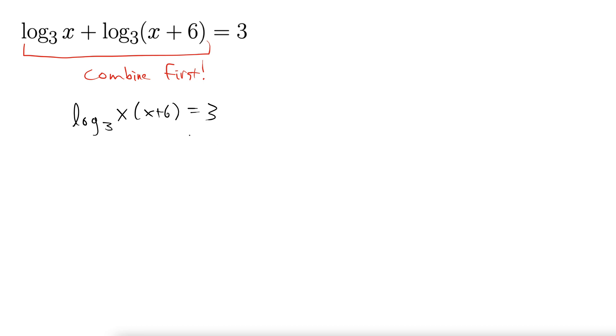Next, we convert this to exponential form. So our base stays the base to the power of 3. That gives us 3 to the power of 3 equals x times x plus 6.